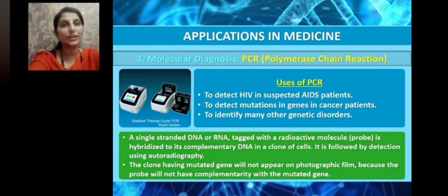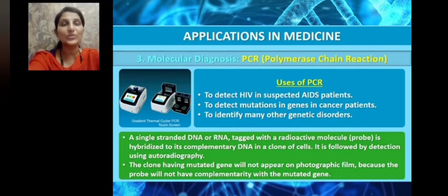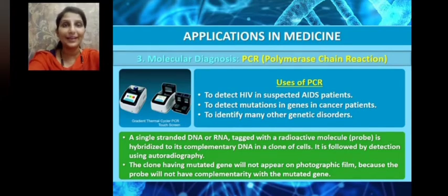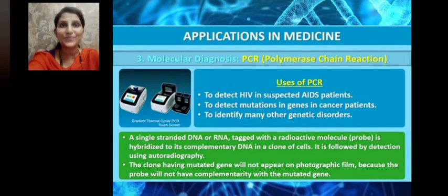If the clone has a mutated gene, it will not appear on the photographic film produced by autoradiography. This allows us to detect the position of a mutated gene, because the probe will not have a complementary strand with the mutated gene. A mutated gene is one whose sequence has been changed. The probe, which is chemically synthesized with a known sequence, will go and attach to complementary DNA. In the case of a mutated gene, the gene order will be wrong, so the probe will not be able to attach. Where the probe cannot attach, that specific position contains a mutated gene.